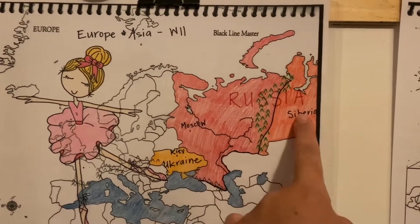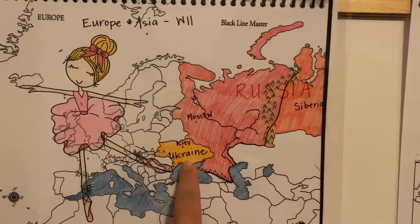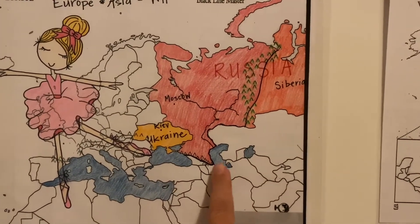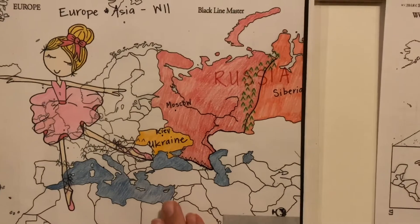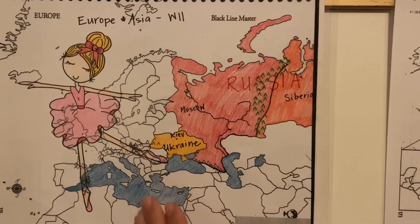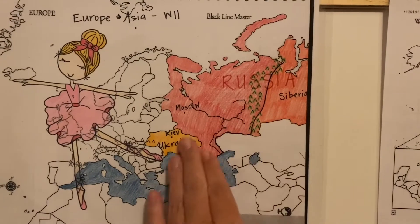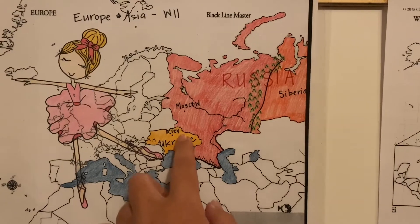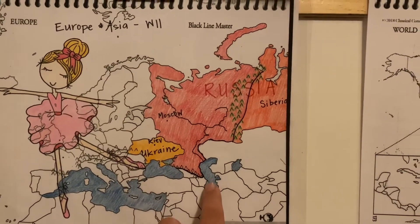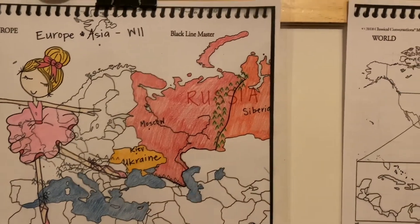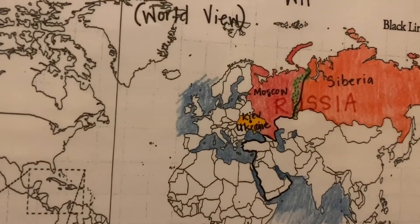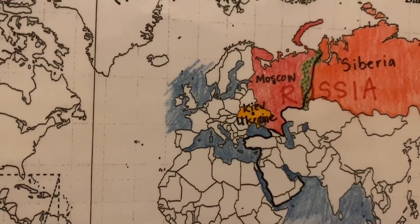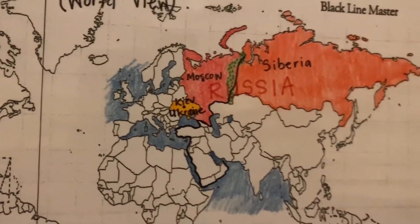I colored in the seas here — the Black Sea, the Caspian Sea, the Aral Sea, and the Mediterranean Sea — so you can have a little context about the areas we're talking about. Ukraine is located just to the north of the Black Sea. Russia borders the Caspian Sea. I colored in the water so you can see a little bit about the geography and commerce of these areas.